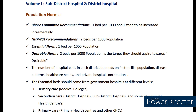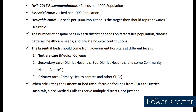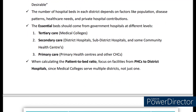The number of hospital beds in each district depends on different factors, for example population of the district, disease patterns, healthcare needs, and the private hospital contributions. The essential beds should come from government hospitals at different levels — primary, secondary, and tertiary care. But when calculating the patient to bed ratio, we need to focus on facilities from PHCs to district hospitals, that is both primary and secondary care, excluding the tertiary care because medical colleges serve multiple districts instead of one.